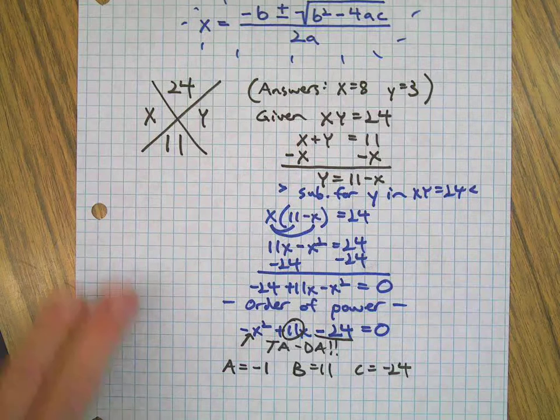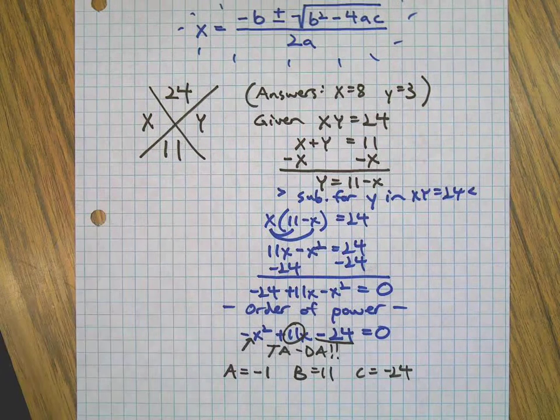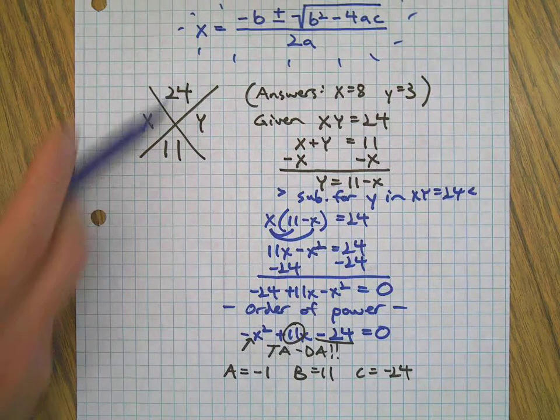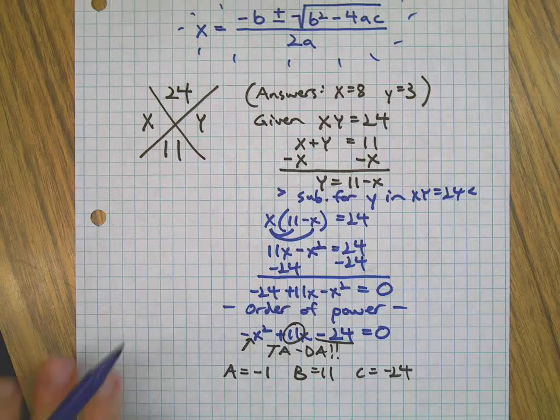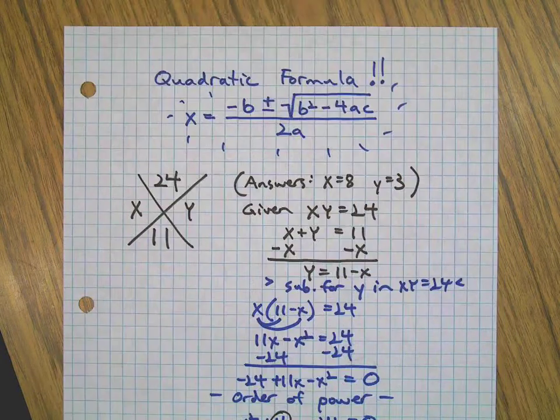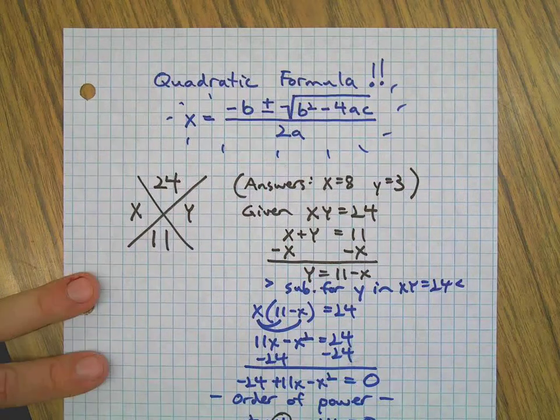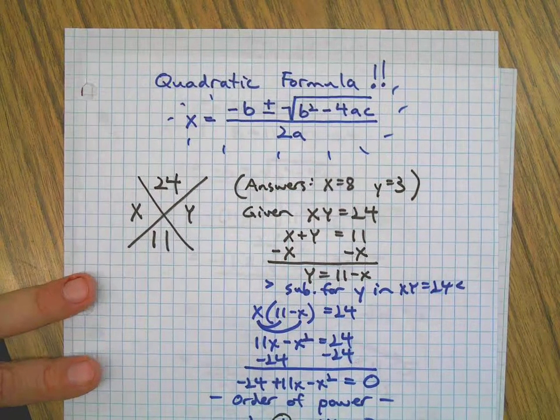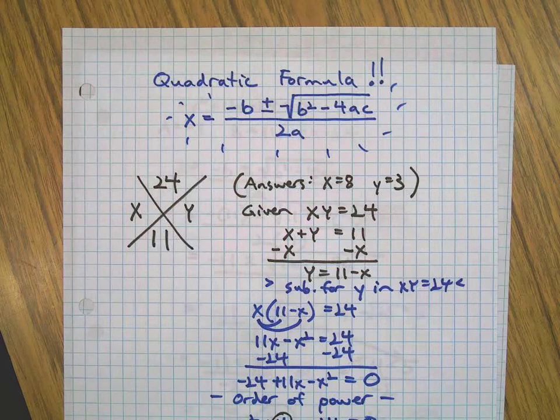So hopefully all you need is a diamond problem with a product and a sum and a missing x and y. There's the quadratic formula. You can solve any diamond problem now without guessing.